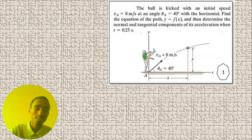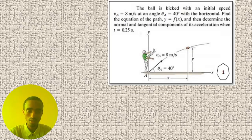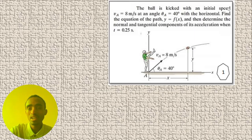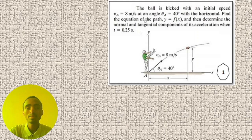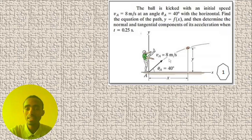Hi everyone, welcome back to my YouTube channel. My name is Noah from AT the University. Today I'm going to solve this problem about projectile motion. A board is kicked with an initial speed of 8 meters per second at an angle of 40 degrees to the horizontal.